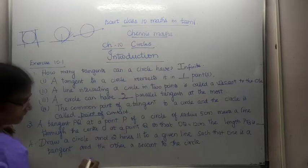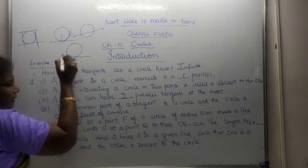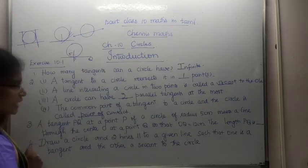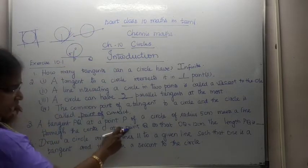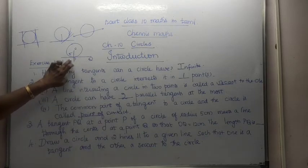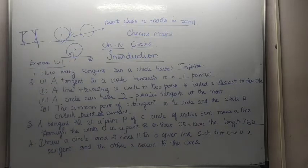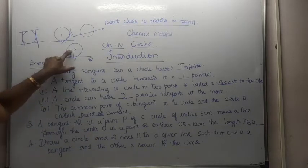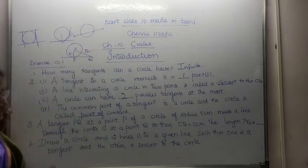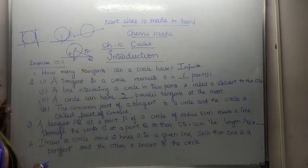A tangent PQ at a point P of a circle of radius 5 centimetres meets a line through the centre O at a point Q, so that OQ is equal to 12 centimetres. The length PQ is how much? Since the tangent meets the radius at 90 degrees, we have a right triangle.